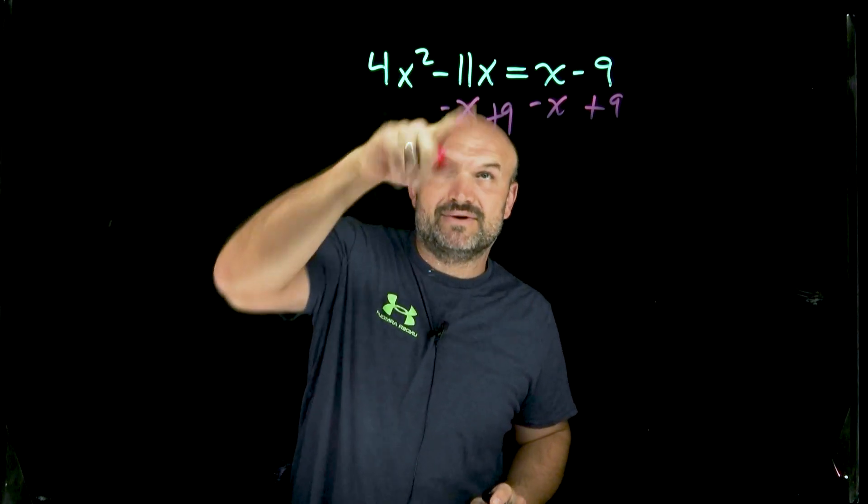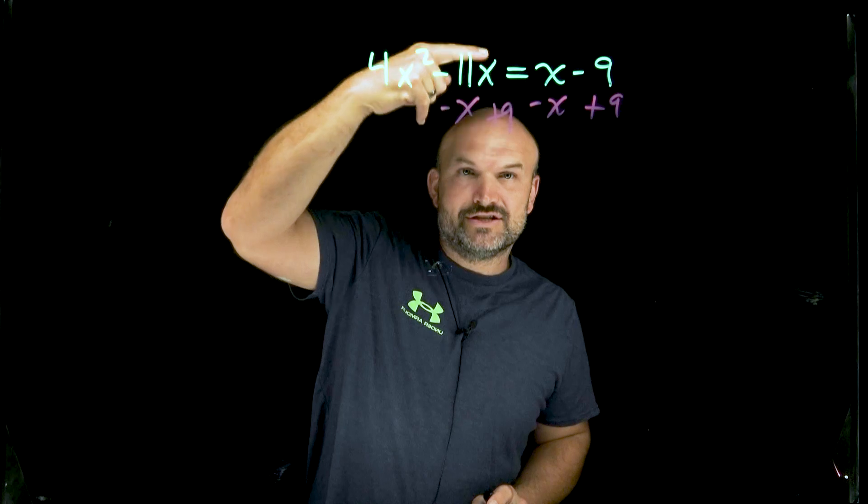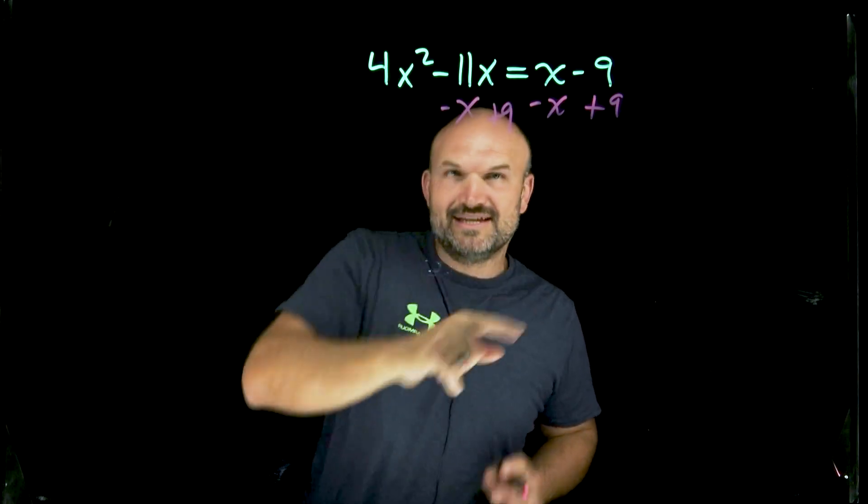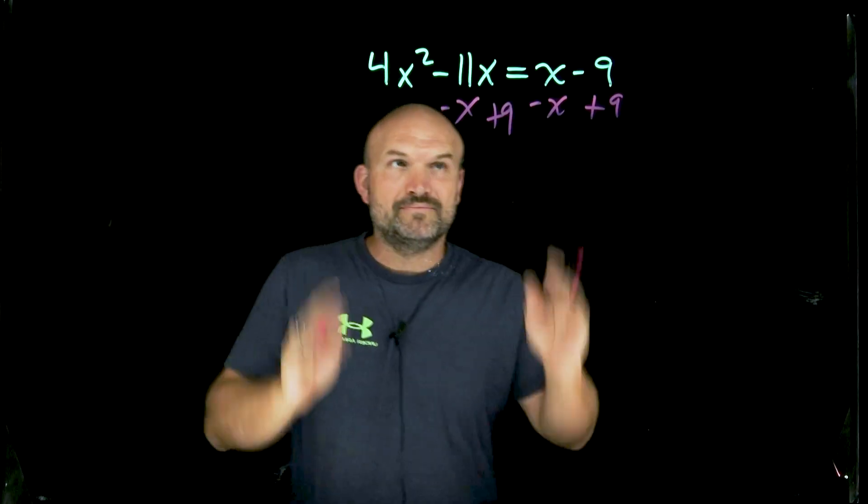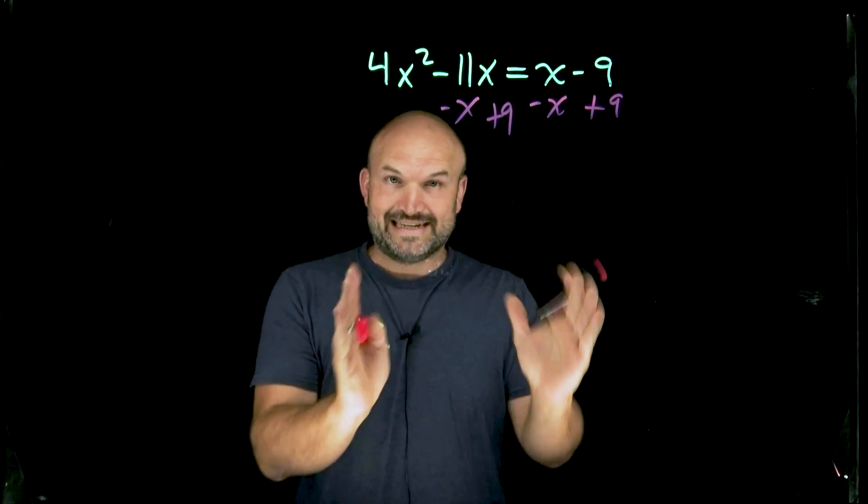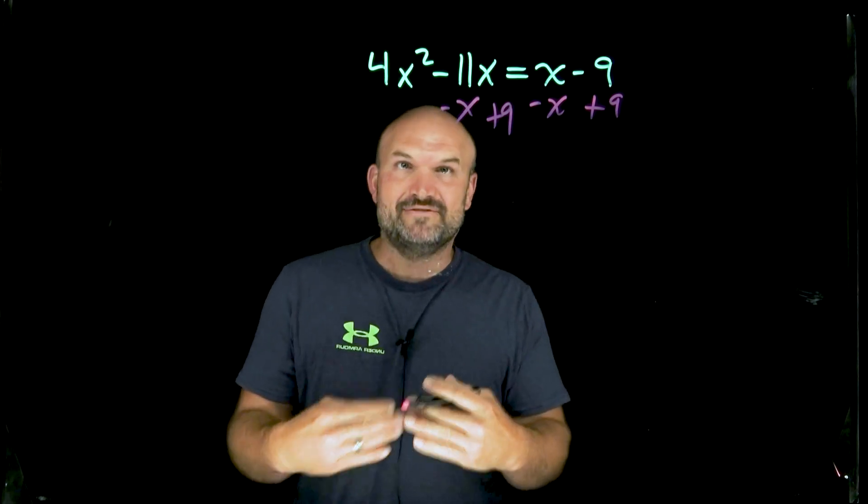I can only subtract 11x with an x. And 9, I can only add that to numbers where there are no numbers there, but you can just kind of think of that as like a zero. So now I'm going to have a quadratic equation equal to zero, then I can get into my factoring.